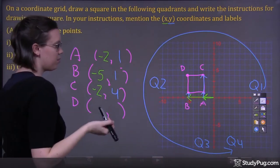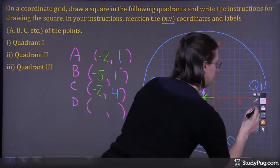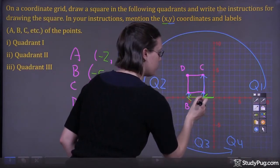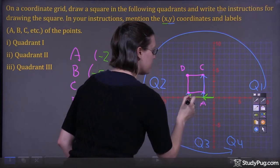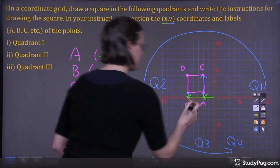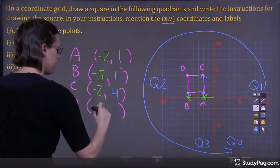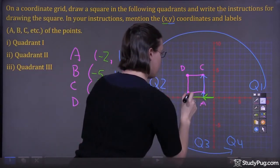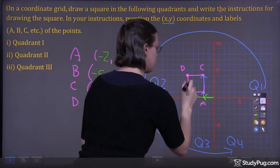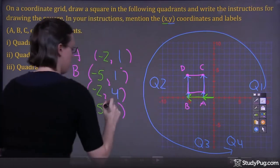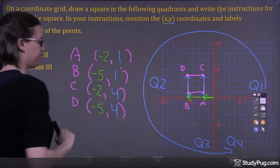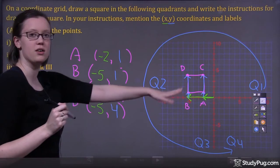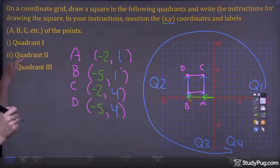Now let's focus on point D. We have 1, 2, 3, 4, 5 to the left — negative 5. And 1, 2, 3, 4 up — positive 4 for Y. That's our coordinates for our square in quadrant 2.